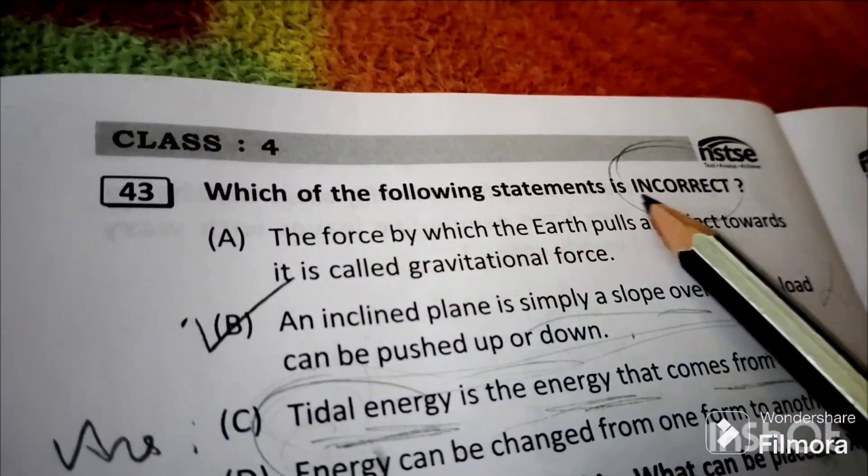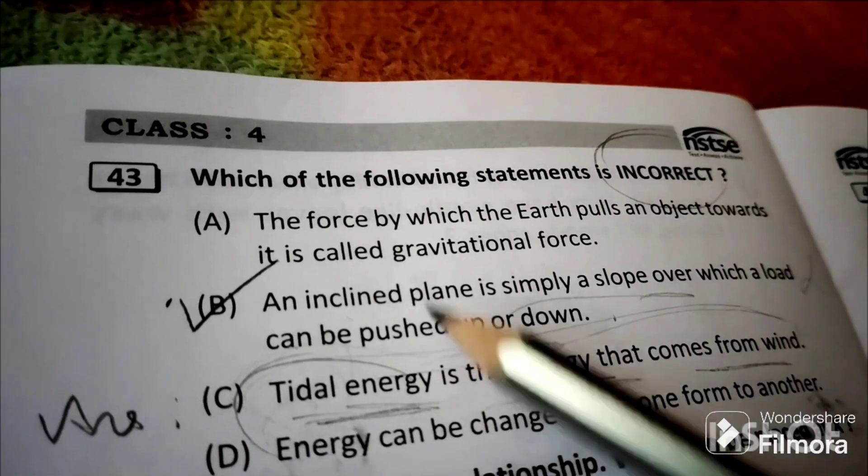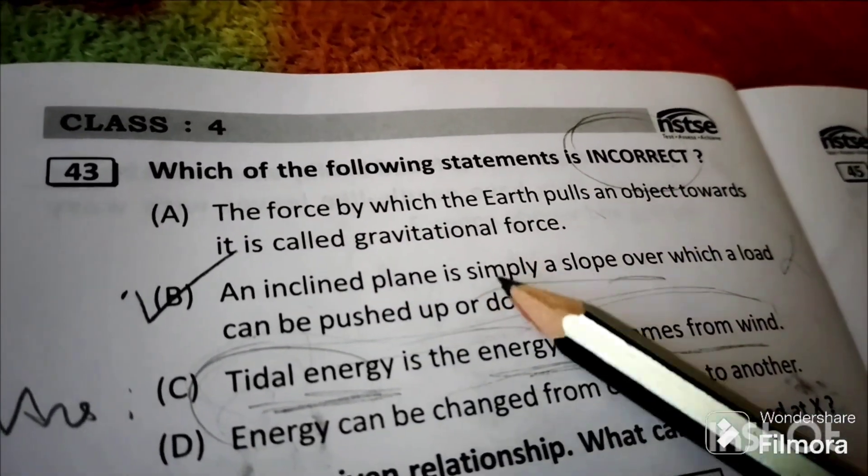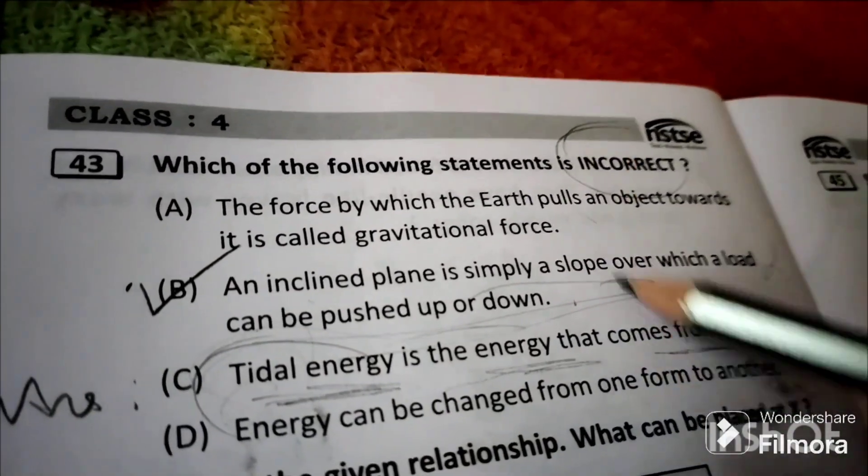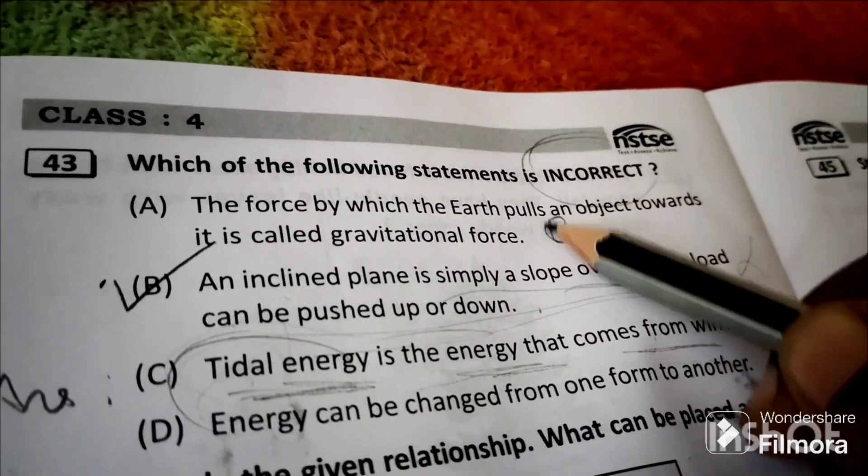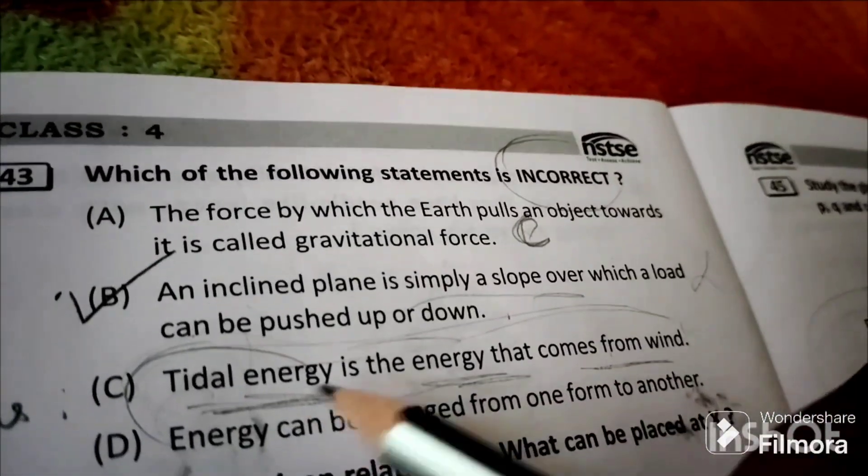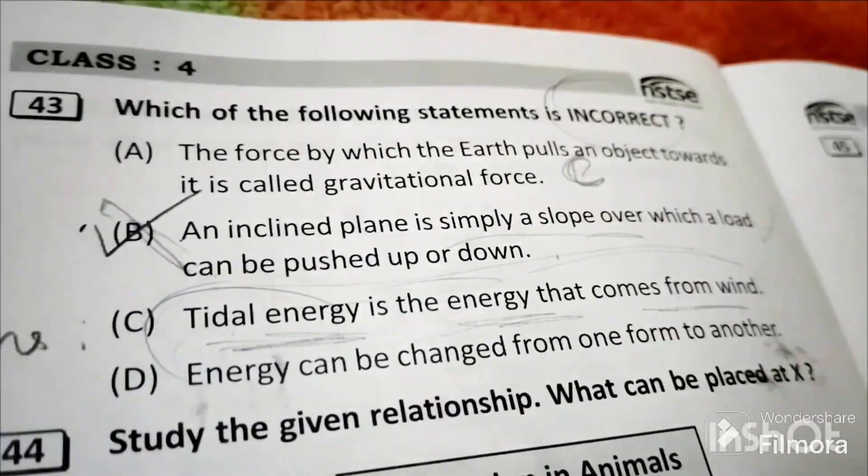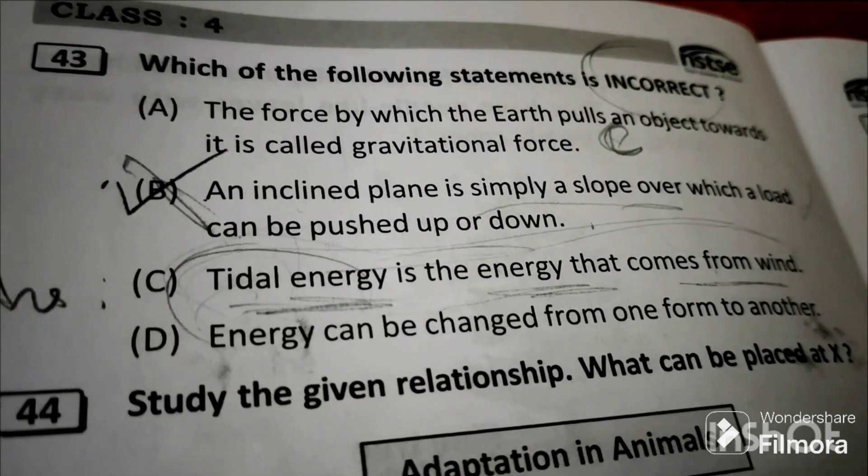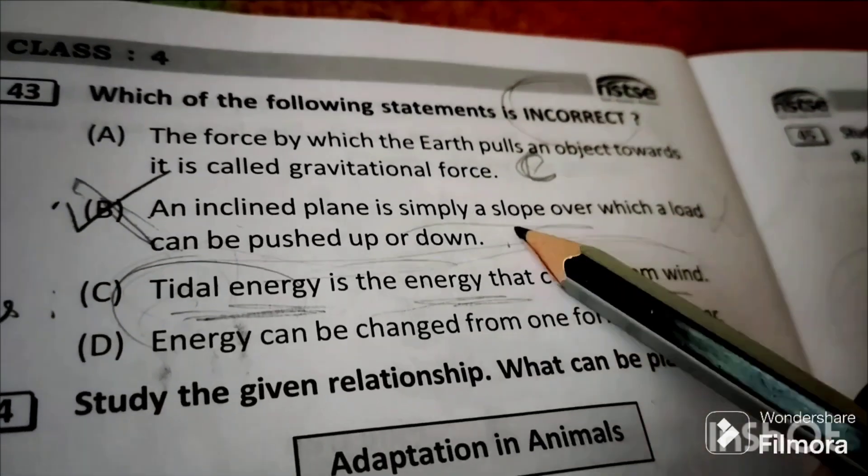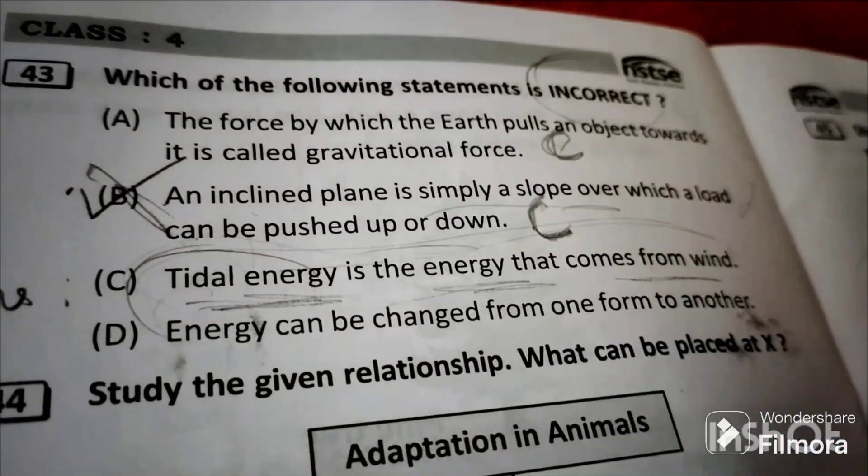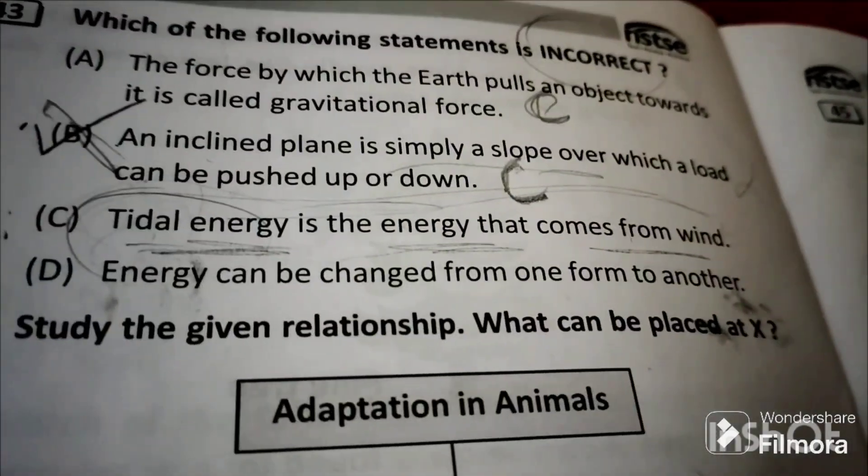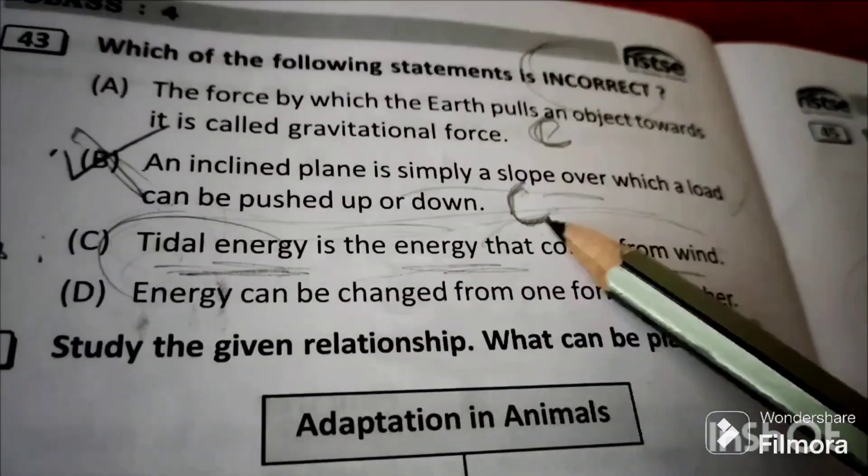Question 43: Which of the following statement is incorrect? A: The force by which the earth pulls an object towards it is called gravitational force. This is correct. B: An inclined plane is simply a slope over which a load can be pushed up or down. This is correct. It's a slope like slide or ramp and the load can be pushed up or down.